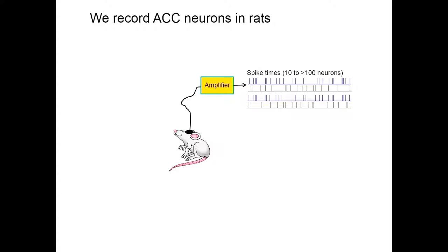We study rats. We hook them up to an amplifier, record from arrays of drivable tetrodes, get spike times from a whole bunch of neurons, and we mainly focus on what happens during actions. We've looked at a massive variety of different tasks — memory tasks, discounting tasks, motivationally driven tasks, sequencing, and so on. But what I'm going to talk about today is mainly action encoding.